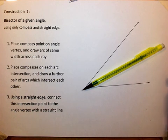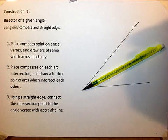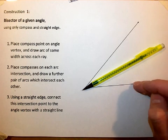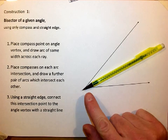Another way of thinking about it is that this line is equidistant from each of the two rays. The distance from this ray to the line is the same as the distance from this ray to the line at any given distance away from the angle vertex.